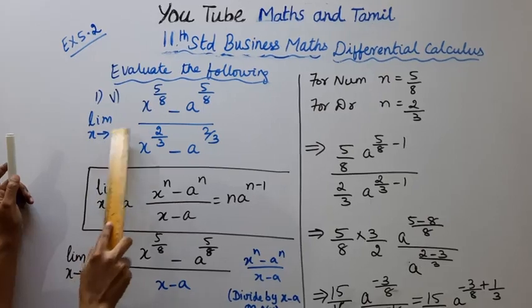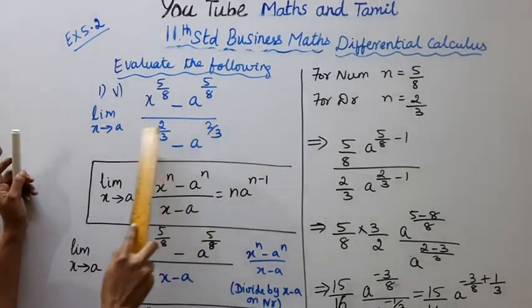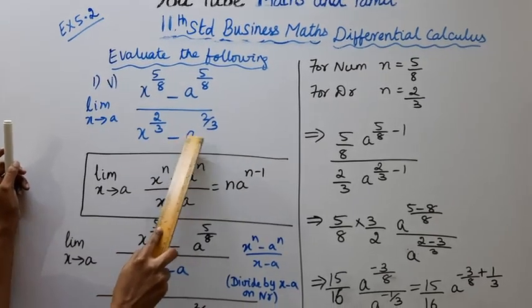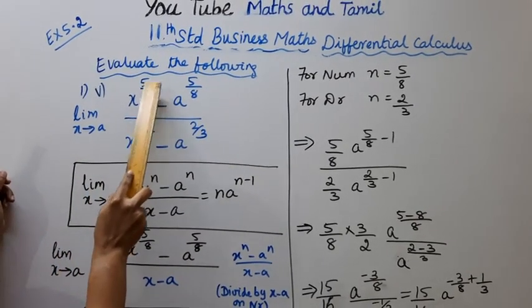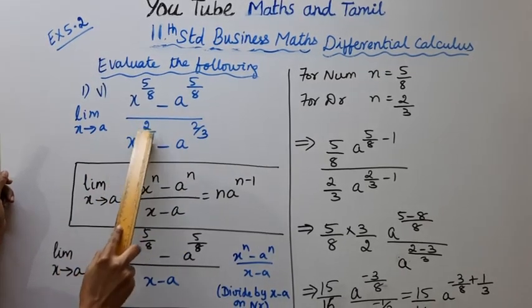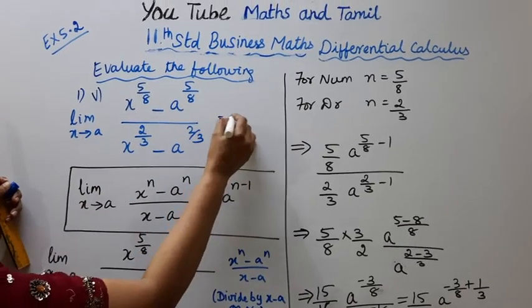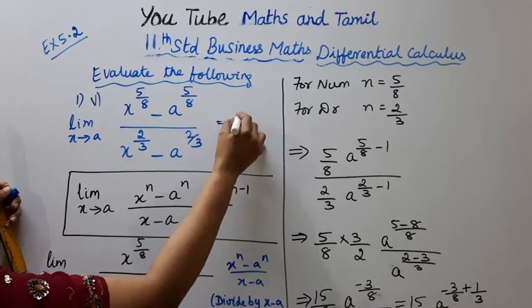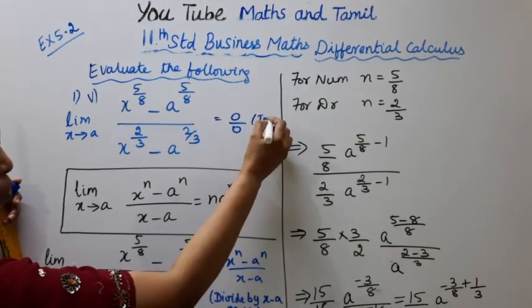Limit X tends to A, X power 5 by 8 minus A power 5 by 8 divided by X power 2 by 3 minus A power 2 by 3. If X is A, we get A power 5 by 8 minus A power 5 by 8, A power 2 by 3 minus A power 2 by 3. If we directly substitute, we get 0 by 0, which is an indeterminate form.